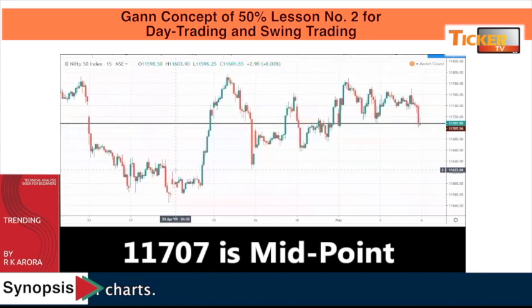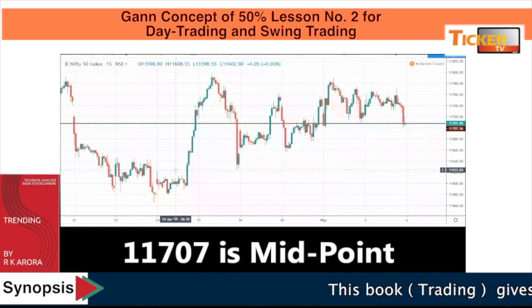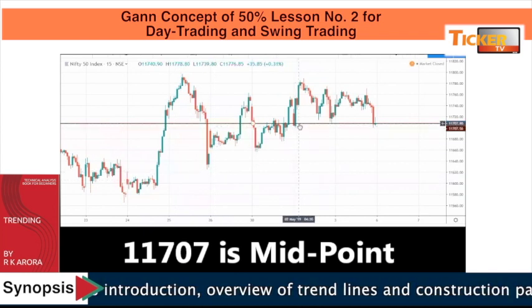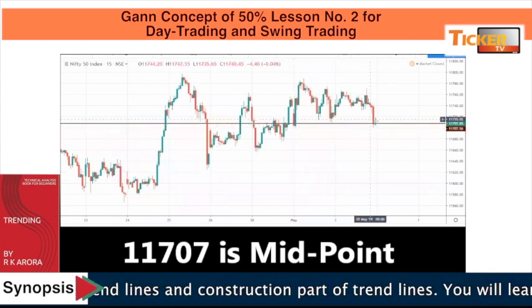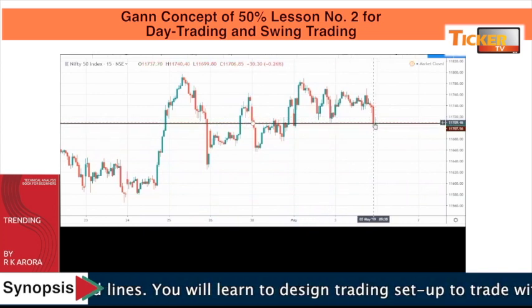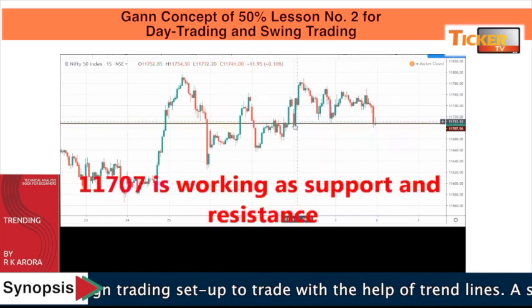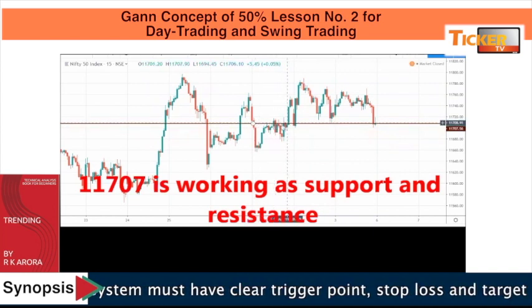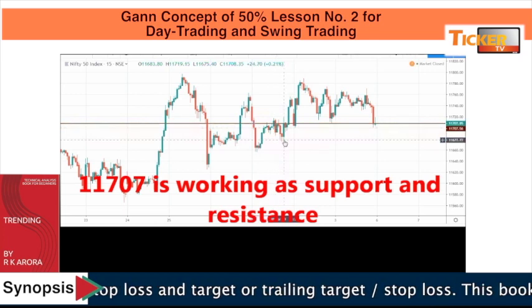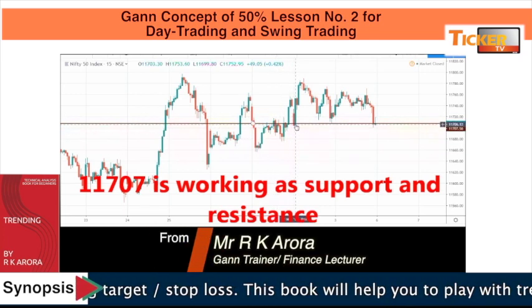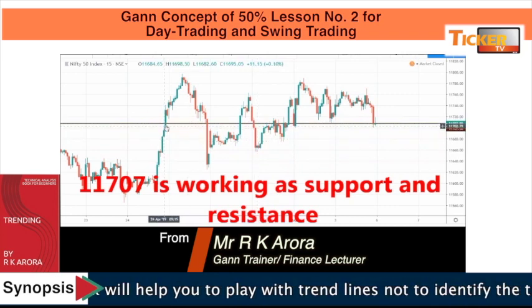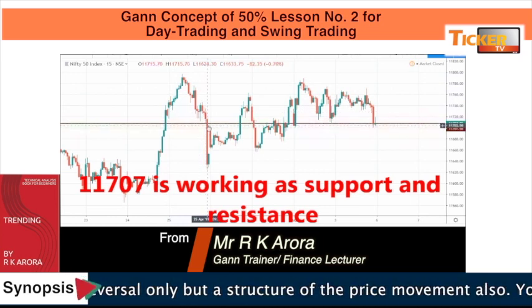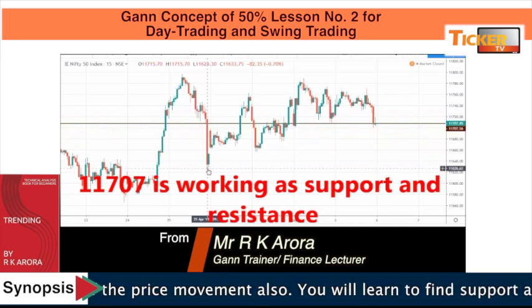Look — the market closed today right at that point. How many times has it tested this level? One, two, three, four, five — five times it has tested this level and bounced from that level. Earlier it was working as a resistance level; the market was approaching this level and falling from this point. So on day trading, if it has gone above this point it has rallied, and if it dropped from this point it has moved downside.